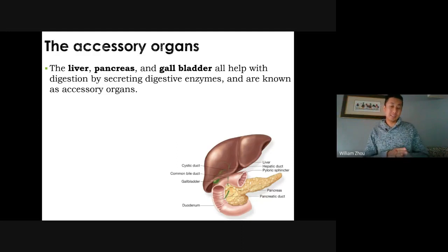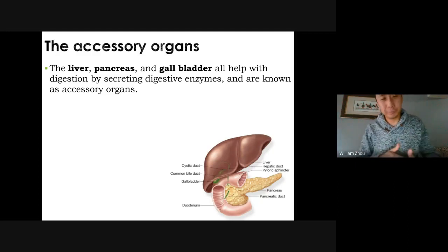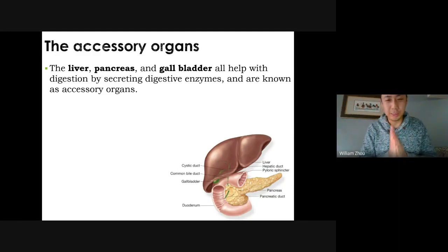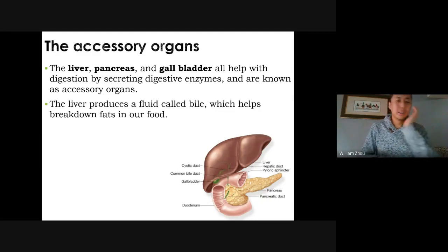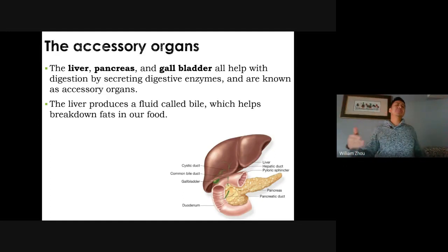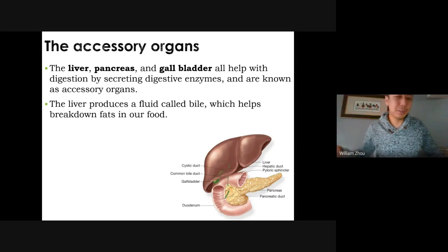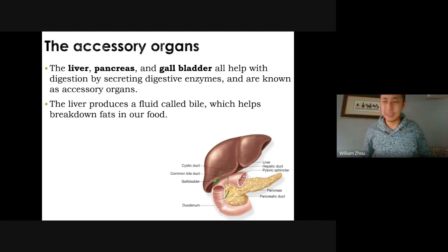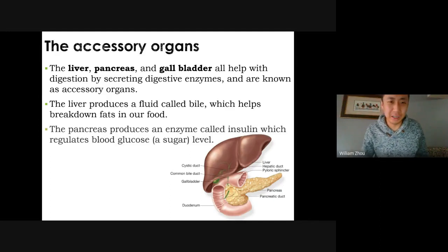There are accessory organs around the digestive system — food doesn't pass through them, but they help. The liver, pancreas, and gallbladder all secrete digestive enzymes. The liver produces something called bile, which is extremely bitter and helps in the breakdown of fat. The gallbladder stores the bile. You don't need to know the details of those enzymes until next year.